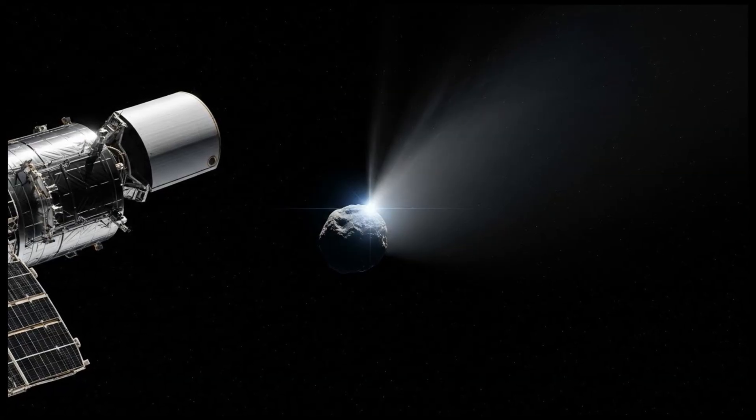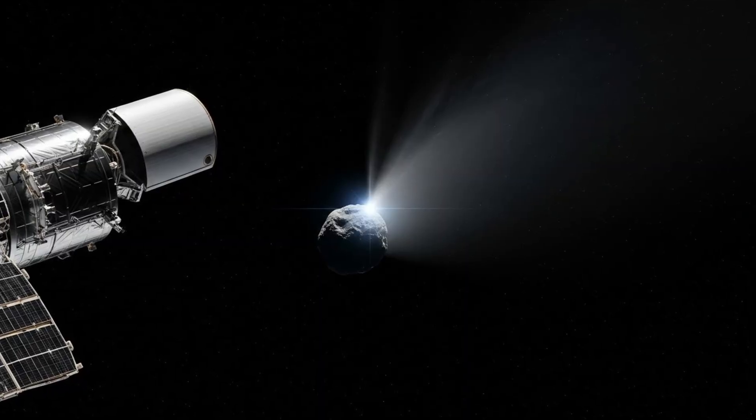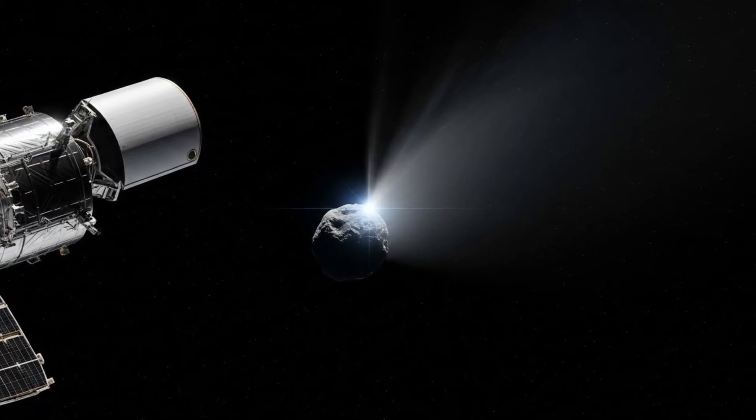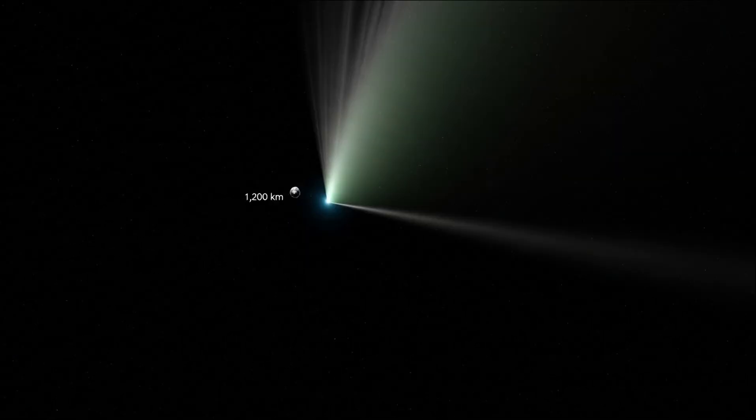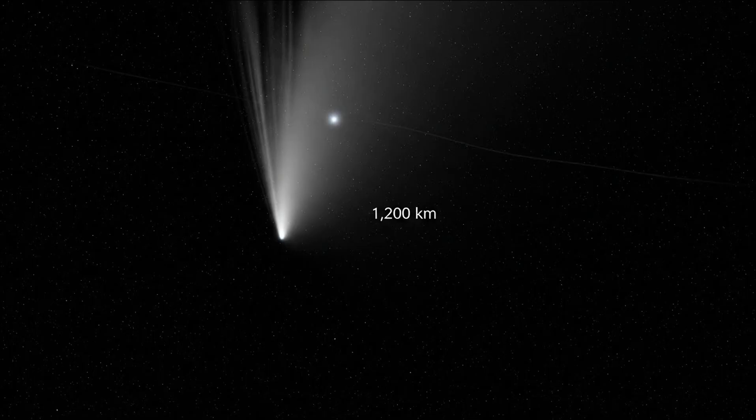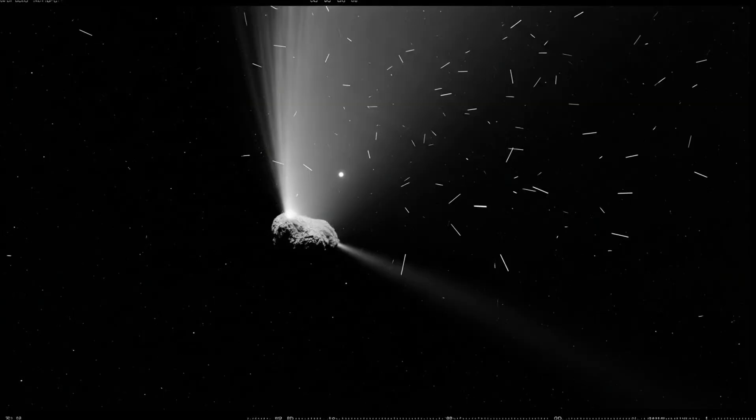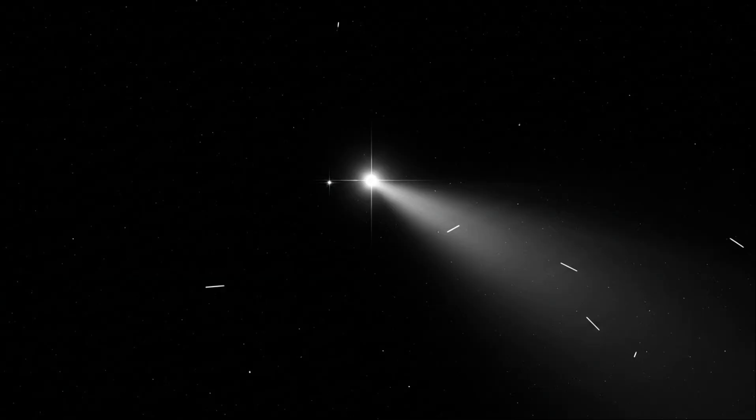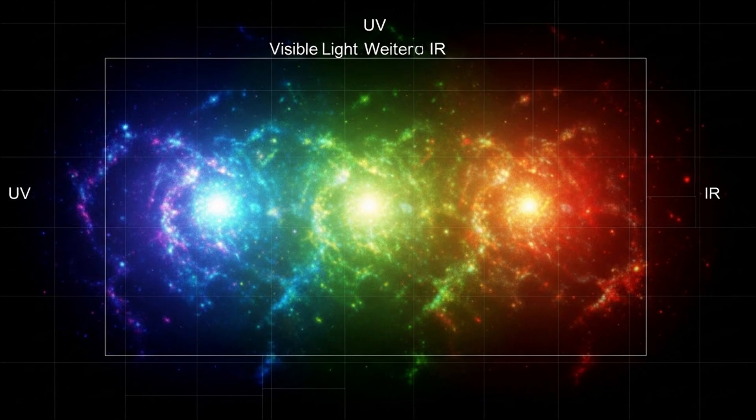But in one four-second exposure window, something appeared. Not on the comet, not part of its tail or coma. Next to it—approximately 1,200 kilometers away from the nucleus, a short distance in cosmic terms but far enough to be distinctly separate. A luminous point source materialized. It wasn't a star. Stars don't appear in single frames and then vanish. It wasn't a cosmic ray strike or detector noise. Those have distinct signatures that are easily filtered out by Hubble's processing algorithms. This was something else.